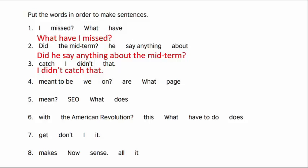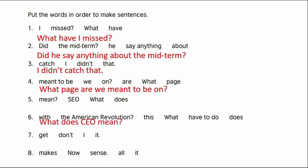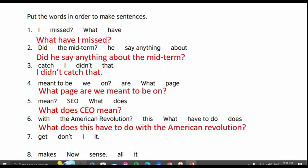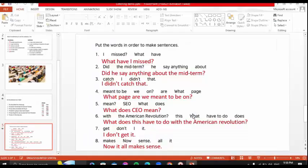Number four — who can answer? Yes. What page are we meant to be on? Number five: what does CEO mean? And so on. I'm going to do the same with the next exercise. Number six: I don't get it. It means, as we said before, I don't understand it. And the last one: now it all makes sense. That's right — and we said make sense means easy to understand. That's right.